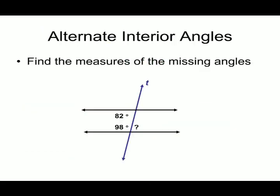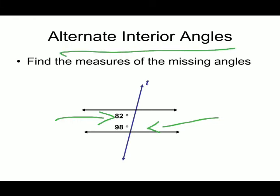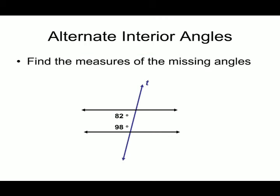Find the measure of the missing angle. The given angle is 82°. This angle and the missing angle are a pair of alternate interior angles, so their measurements are equal. The missing angle is also 82°.